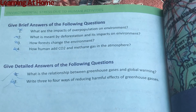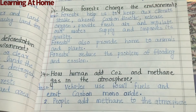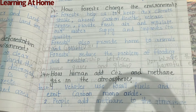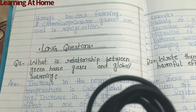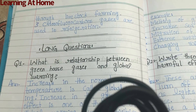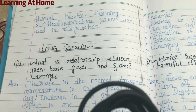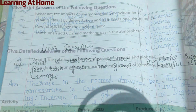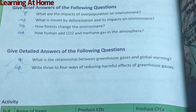Question number four: how do humans add carbon dioxide and methane gas into the atmosphere? Answer: number one, vehicles use fossil fuels and emit carbon monoxide. Number two, people add methane to the atmosphere through livestock farming. Number three, chlorofluorocarbon gases are used in refrigeration.